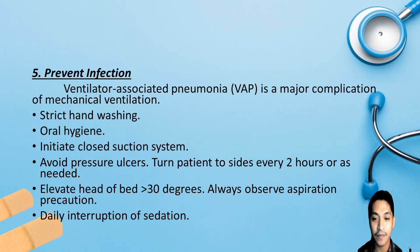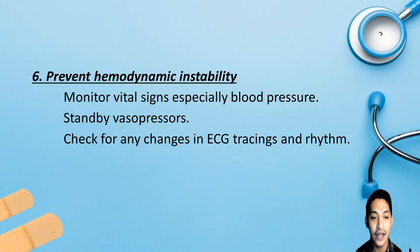The sixth care essential is preventing hemodynamic instability. Monitor the patient's blood pressure every hour, especially after ventilator settings are changed or adjusted. Mechanical ventilation causes thoracic cavity pressure to rise on inspiration, which puts pressure on blood vessels and may reduce blood flow to the heart, causing blood pressure to drop. To maintain hemodynamic stability, you may need to increase IV fluids or administer a vasopressor such as norepinephrine if ordered. Also check for changes in ECG tracings and rhythm.